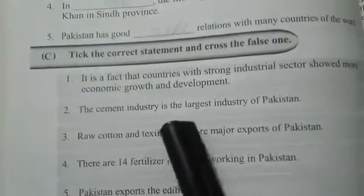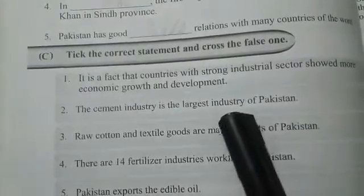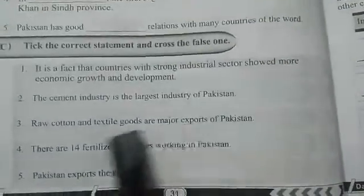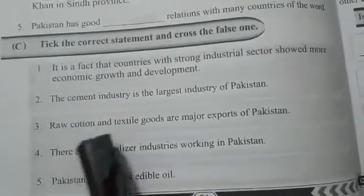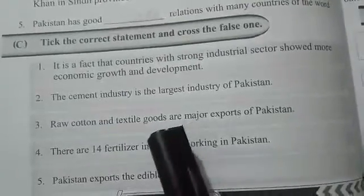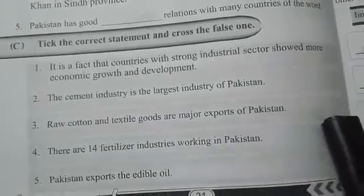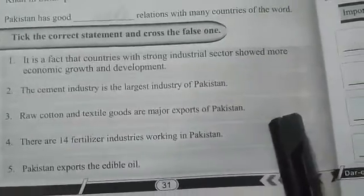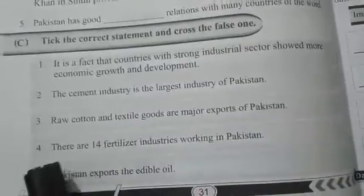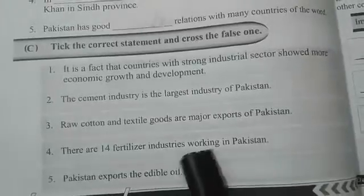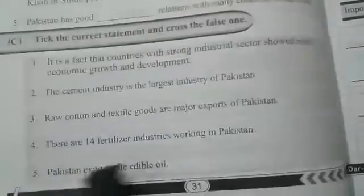Second: The cement industry is the largest industry of Pakistan. Cross. Third: Raw cotton and textile goods are the main exports of Pakistan. True. Fourth: There are 14 fertilizer industries working in Pakistan. True.